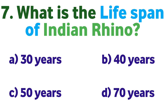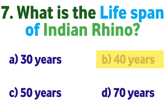Question number seven: What is the lifespan of the Indian rhino? Option A: 30 years, B: 40 years, C: 50 years, D: 70 years. Correct answer is B: 40 years.